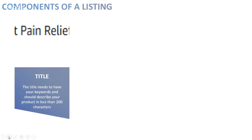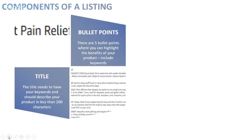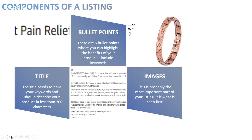What are the components of a listing? We've got the title, which is probably the most important aspect from Amazon's point of view — not necessarily from the buyer's point of view, but certainly from Amazon's. The title needs to have your keywords and should describe your product in less than 200 characters. The next section is the bullet points, where you can highlight the benefits of your product across five bullet points, and these should also include your keywords.